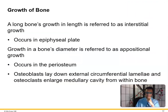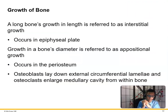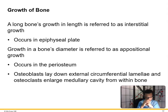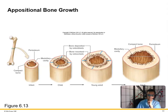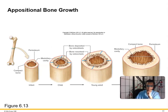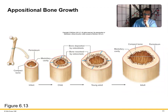Growth in length of long bones is referred to as interstitial growth and occurs at the epiphyseal plate. Growth in bone diameter is referred to as appositional growth and occurs in the periosteum — osteoblasts lay down external circumferential lamellae and osteoclasts enlarge the medullary cavity from within. You can see this progression from infant to child to young adult to adult as the bone gets wider.